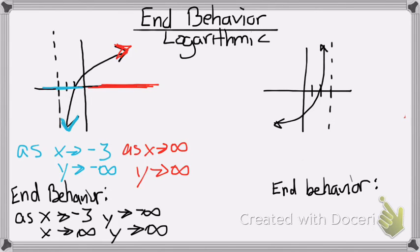Alright, let's try this next example. Looking on the left side, I notice that my x values, there's nothing stopping it, so it's going all the way to negative infinity.